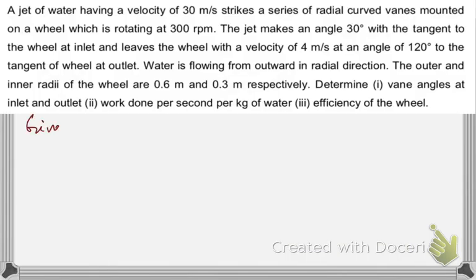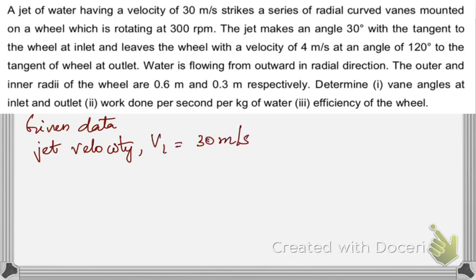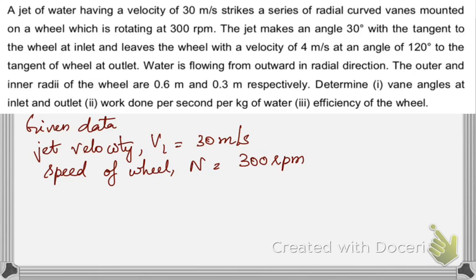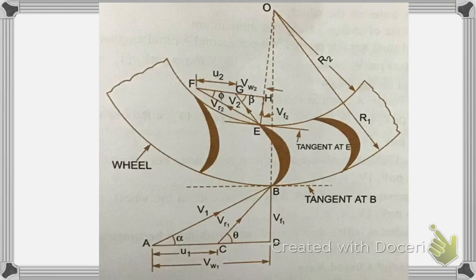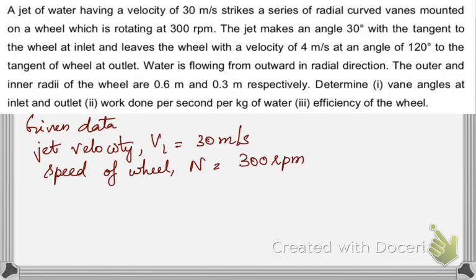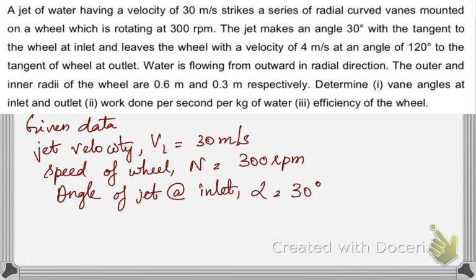The first given data is jet velocity of 30 meters per second, denoted by v1, which is 30 m/s. Then the speed of the wheel is n = 300 rpm. The jet makes an angle of 30 degrees with the tangent to the wheel at inlet. Since it is given as inlet, we check the inlet velocity triangle diagram, where alpha is the angle of jet at inlet, so alpha = 30 degrees.